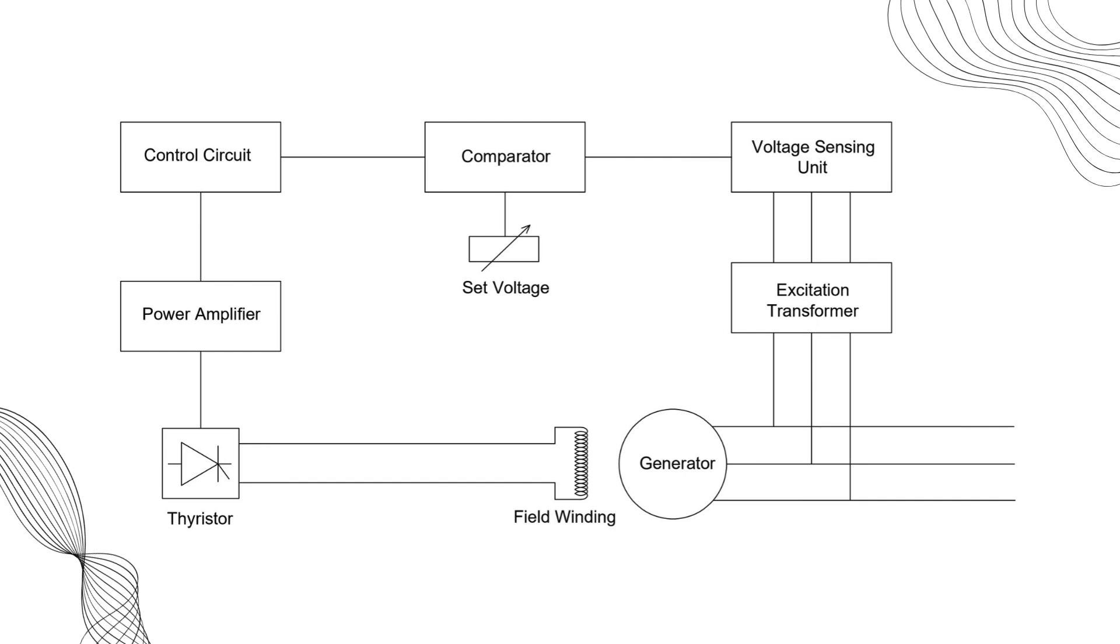The control circuit processes this signal and sends a control signal to the power amplifier, which then drives the thyristor banks to adjust the output DC voltage. Finally, this regulated DC supply is fed to the generator rotor via a slip ring and brush assembly.